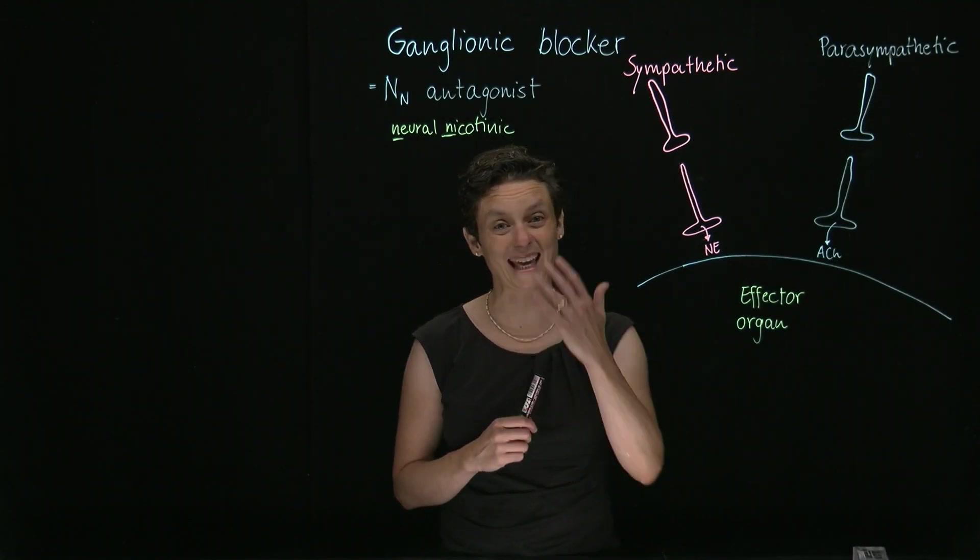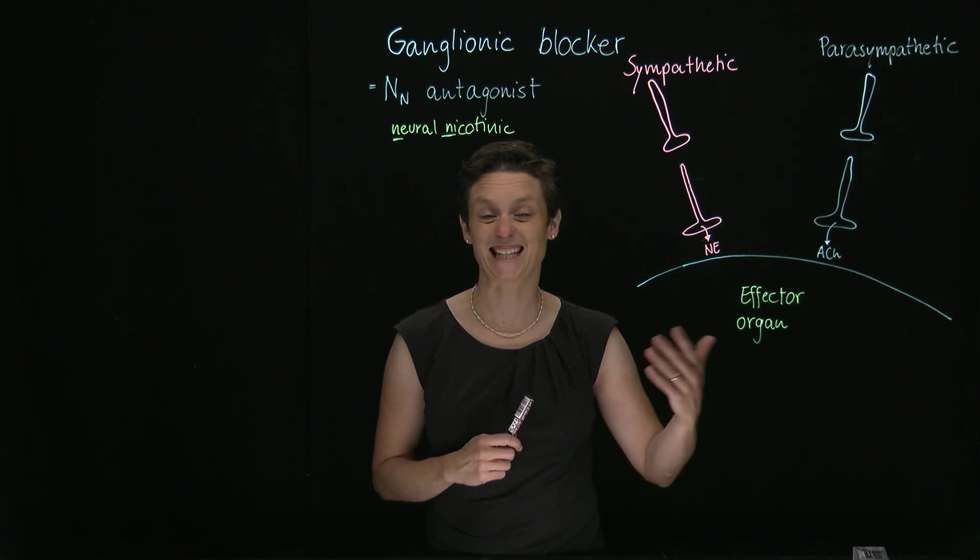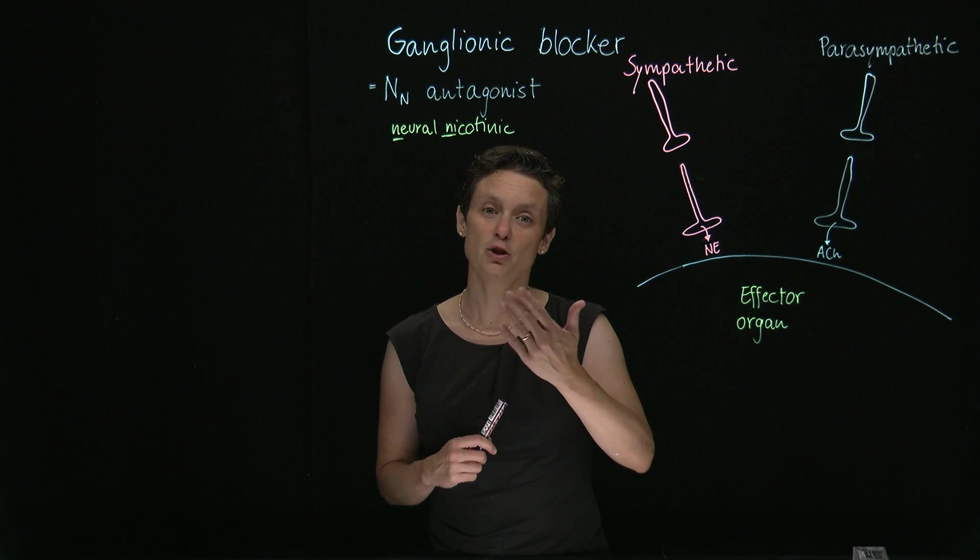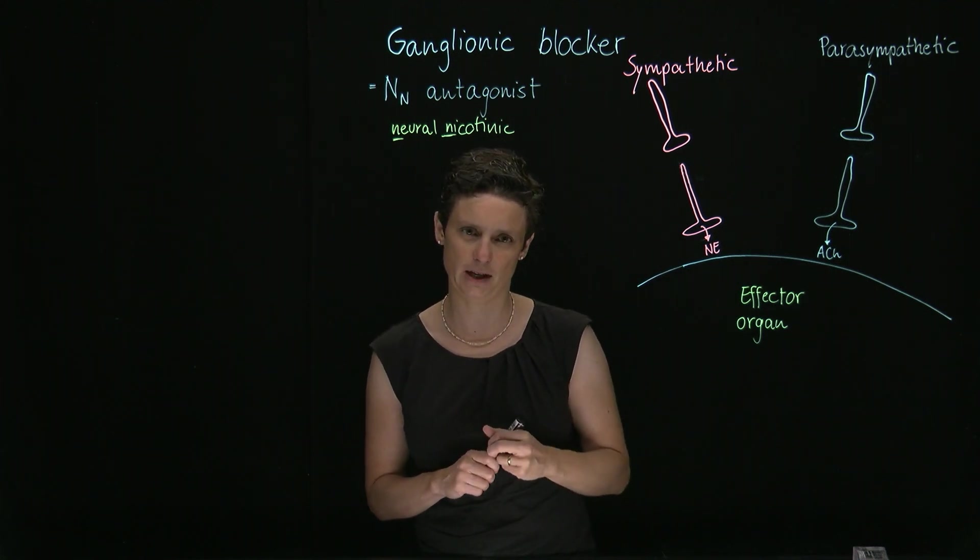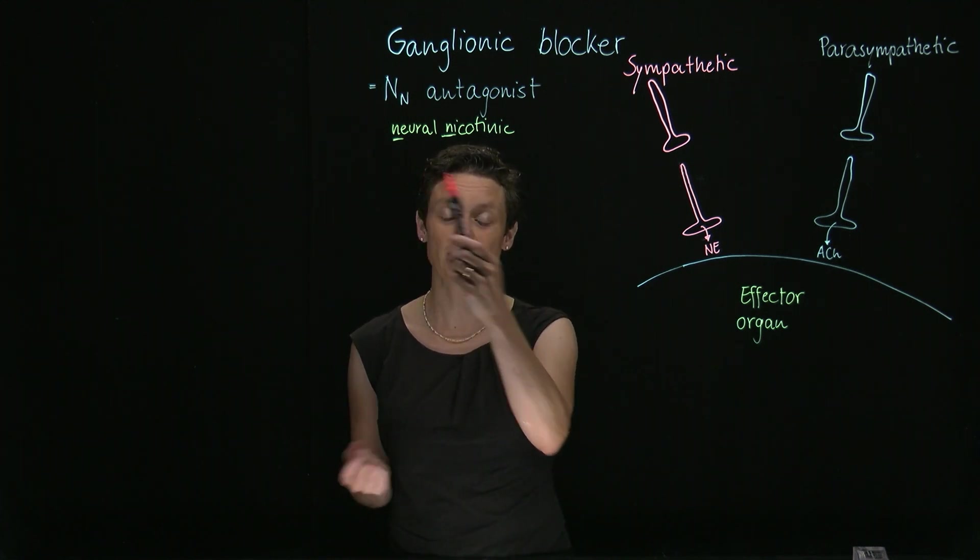In this video, I want to talk about ganglionic blockers. Ganglionic blockers are NN antagonists. The NN receptor is the neural nicotinic receptor, one flavor of cholinergic receptors, a ligand-gated ion channel. And as the name already implies, it sits on neurons.